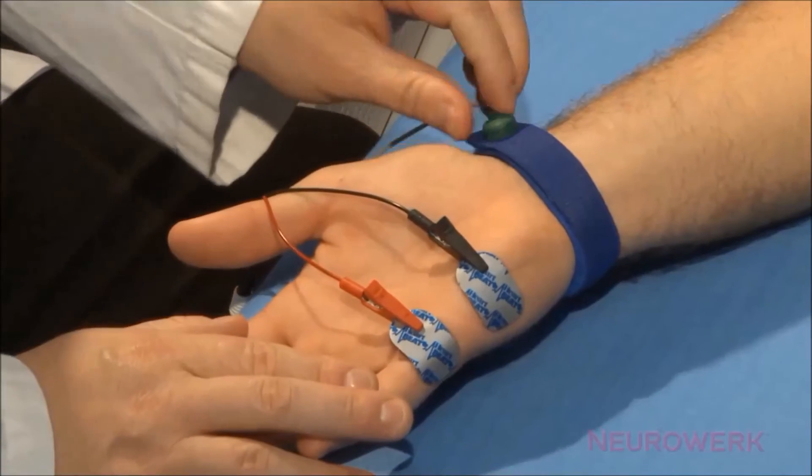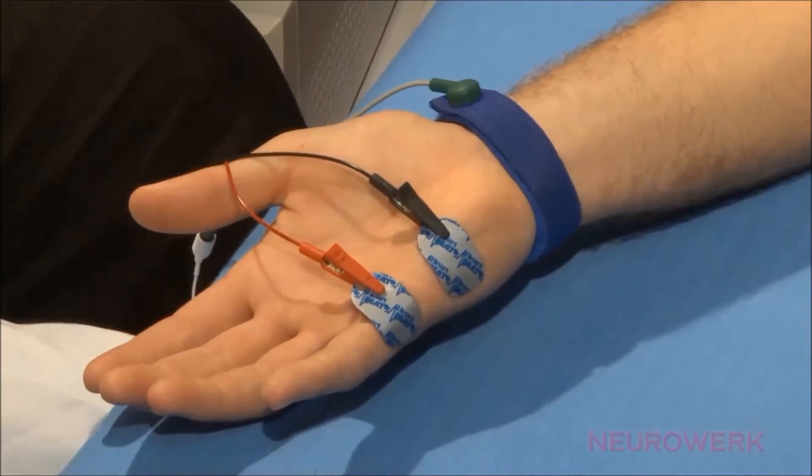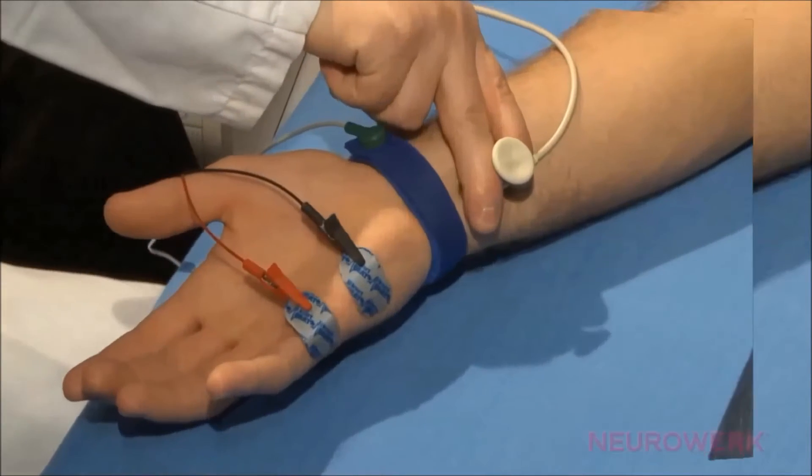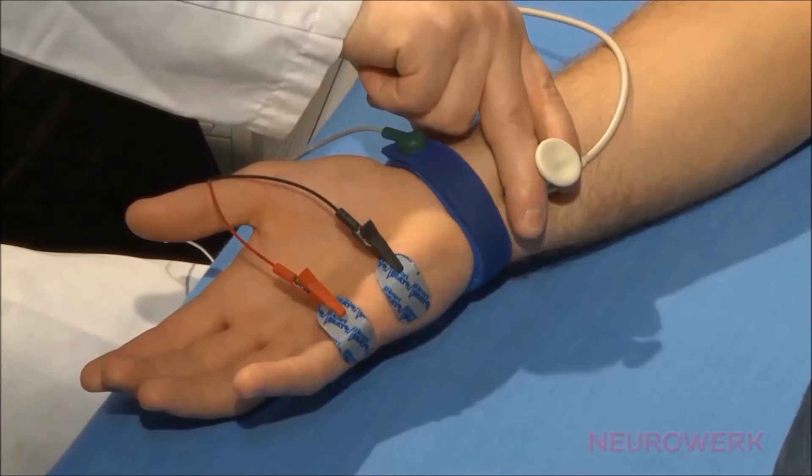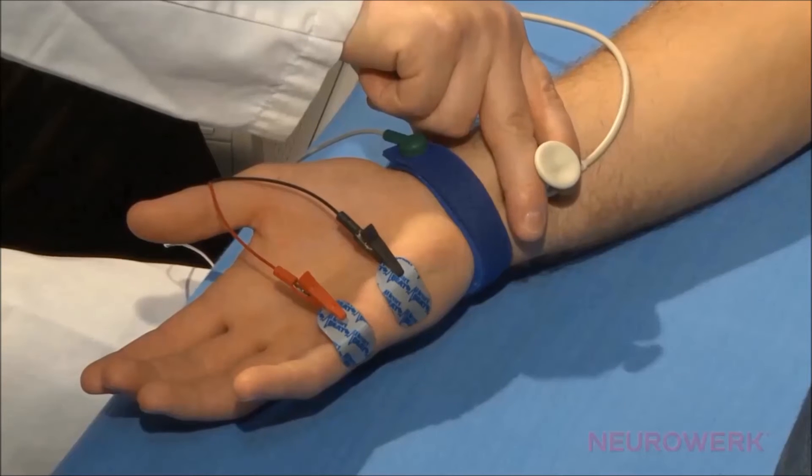The ground electrode is fixed proximally from the recording electrodes. Initially, the ulnar nerve is stimulated distally, and this occurs right behind the wrist.